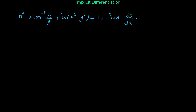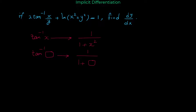The derivative of tangent inverse of x is 1 over 1 plus x squared. But this is only for tangent inverse of x. If we have tangent inverse of a general expression or a function, then the derivative would be 1 over 1 plus that expression squared, and because of the chain rule, you have to multiply it by the derivative of the inside expression.